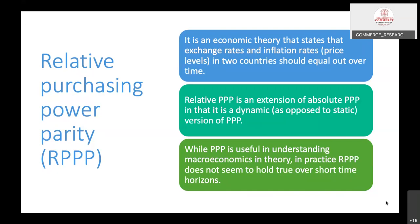While purchasing power parity is useful for understanding macroeconomics in theory, in practice, relative purchasing power parity does not seem to hold true over short-term horizons. The relative purchasing power parity is theoretically possible, but practically very difficult. Inflation is really dynamic and exchange rates are dynamic. So exchange rates and inflation rates between two countries being the same has never happened — it is impractical. Theoretically, relative purchasing power parity is the equilibrium state of exchange rates and inflation rates among countries.